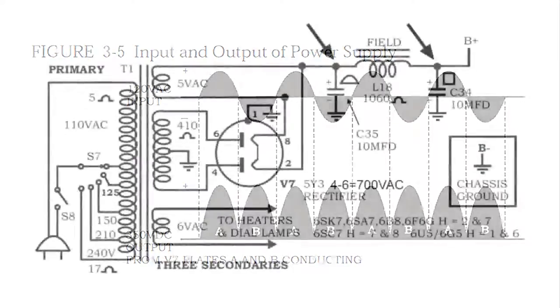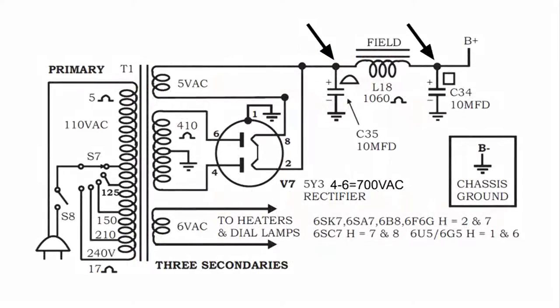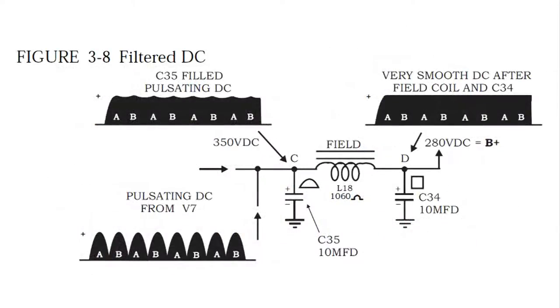Now let's take a look at what this filter does to this pulsating DC voltage that's coming from the 5Y3. Here's another drawing from the book. And down at the bottom, you can see the pulsating DC, A and B.